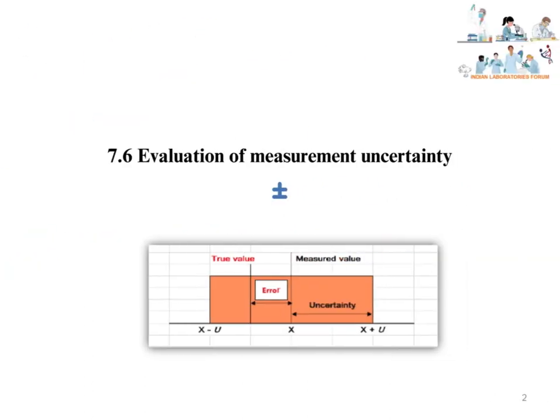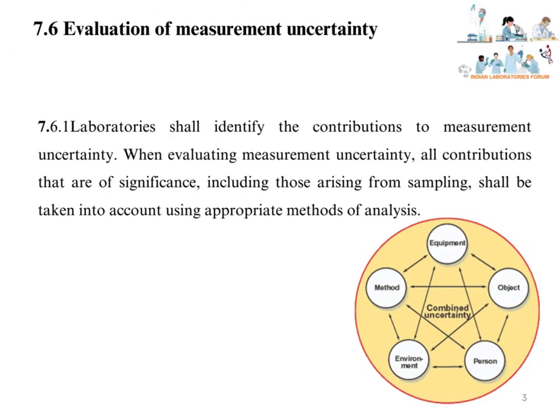Clause 7.6: Evaluation of Measurement Uncertainty. Laboratories shall identify the contributions to measurement uncertainty, such as contributions from equipment, chemicals, reference materials, glassware, and any other contributing factors used in the specific test or calibration.